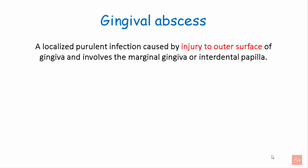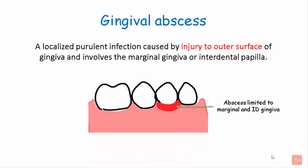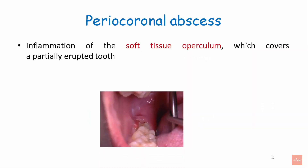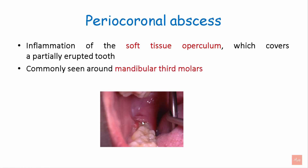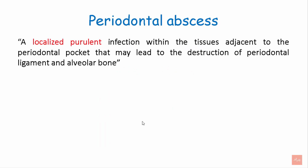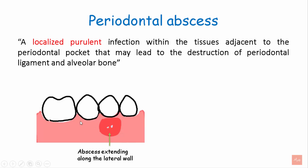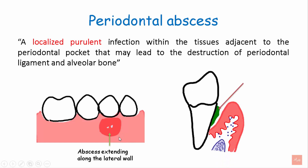Just to revise from Part 1, we'll go through the different types of periodontal abscesses. A gingival abscess is a localized purulent infection caused by injury to the outer surface of the gingiva and involves the marginal or the interdental papilla. A pericoronal abscess is inflammation of the soft tissue operculum which covers the partially erupted tooth and is generally associated with the mandibular third molars. A periodontal abscess is a localized purulent infection within the tissues adjacent to the periodontal pocket and may lead to the destruction of periodontal ligament and alveolar bone. It extends from the marginal gingiva apically towards the mucogingival junction and is a result of plaque and calculus deposition leading to inflammatory cell infiltrate.